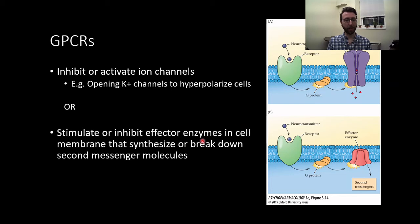Another thing that GPCRs can do is stimulate or inhibit effector enzymes in cell membranes that synthesize or break down second messenger molecules. So we see here, we have the stimulation of our GPCR, which is going to activate this G protein, which is going to stimulate this effector enzyme. This is just an enzyme that's going to help synthesize second messengers. And we'll talk next time all about what second messengers are and what they do. An example of this would be stimulation of a dopamine D1 type receptor increasing the levels of cyclic AMP, a signaling molecule that's downstream of that receptor.